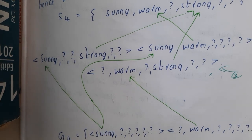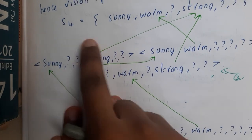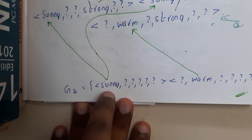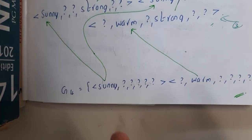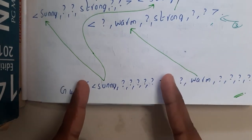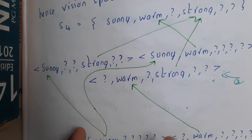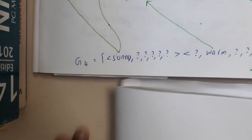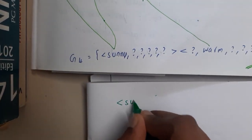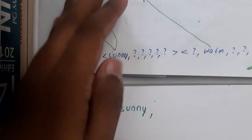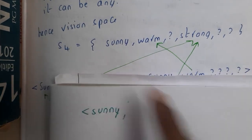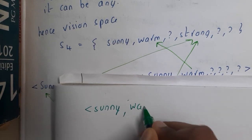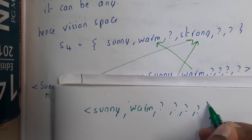In S4 we have: sunny, warm, question mark, strong, question mark, question mark. In G4 we have: sunny with all question marks, and question mark warm with the rest as question marks. The first thing you do is take the first one — sunny with all question marks. Take any one parameter from this; let us take sunny. Since sunny is already written, let us take warm instead. So: sunny, warm, and the rest are question marks — that is your first version space.